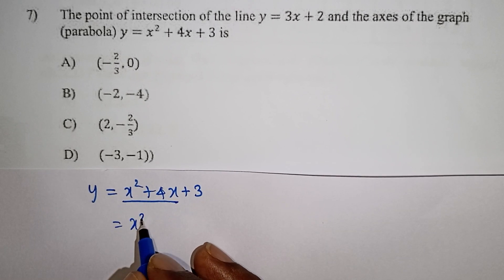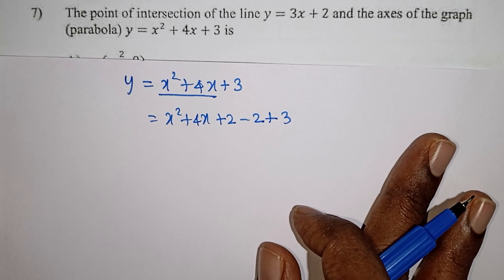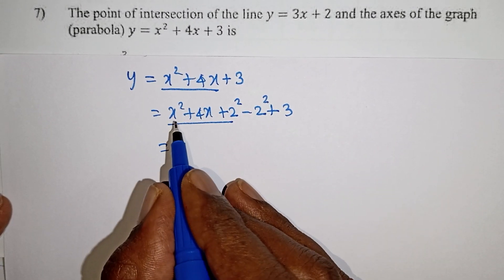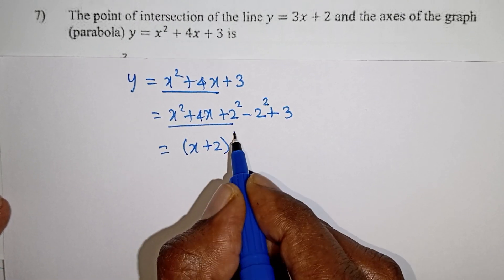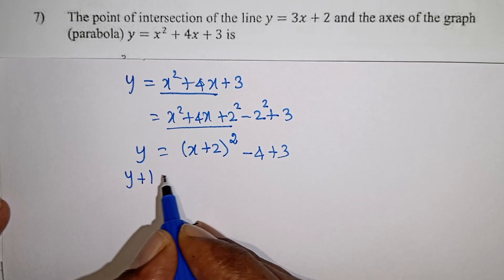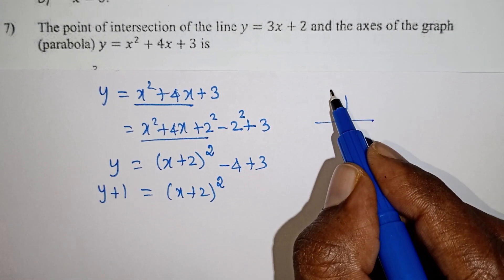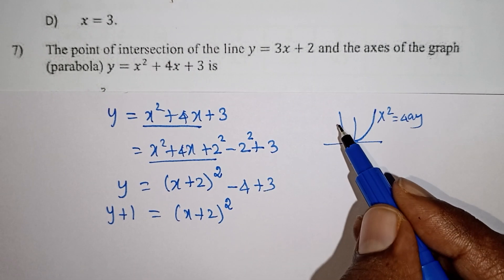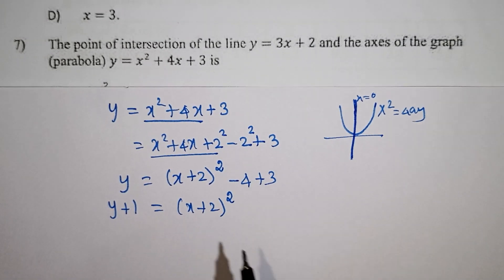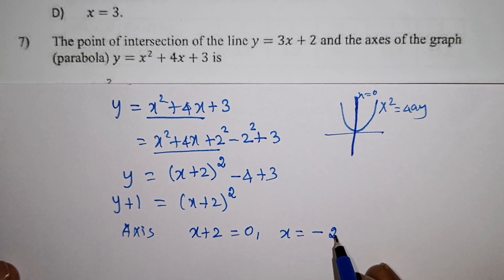Add and subtract: a squared plus 2ab plus b squared — a plus b whole squared. Here, minus 4 plus 3 gives minus 1, so y plus 1 equals x plus 2 whole squared. This matches x squared equals 4ay form. For the axis of a parabola in this form, the x-term equals 0, so x plus 2 equals 0, giving x equals minus 2.